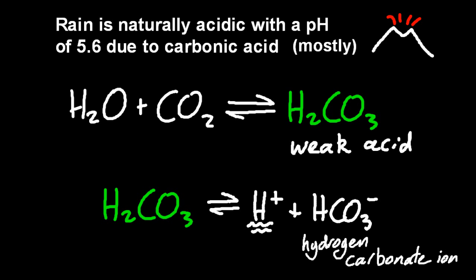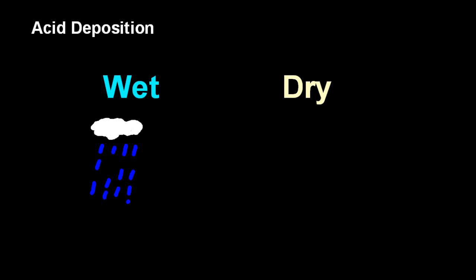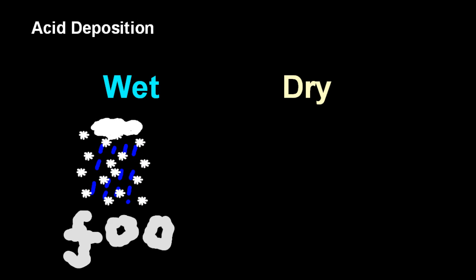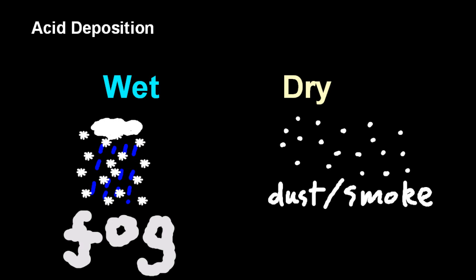Acid deposition—there are two sorts: wet and dry. The wet, well that's acid rain. It's also acid snow and acid fog as well. Dry deposition, well that's where the gases stick onto existing smoke particles or dust particles. You don't need water for that, and it may later dissolve.